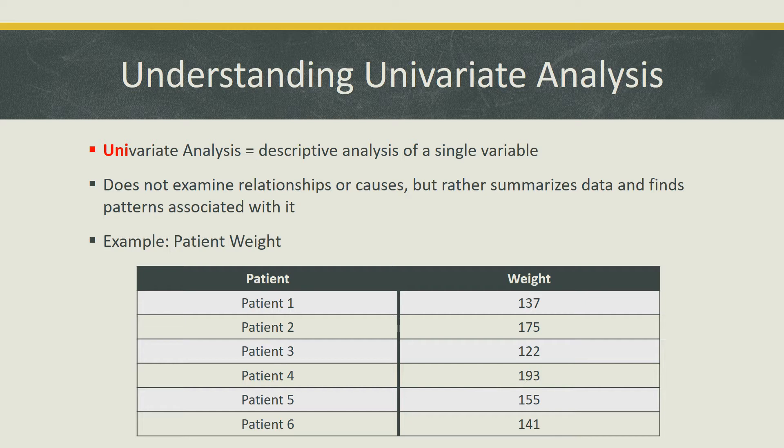It is used to get a basic picture of what a sample looks like, rather than examining relationships and causes. Bivariate analysis, on the other hand, involves two variables and observes the relationships between them.